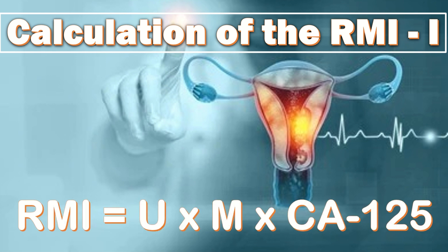The RMI is a product of the ultrasound scan score, the menopausal status, and CA-125, as shown in the formula: RMI = U × M × CA-125.